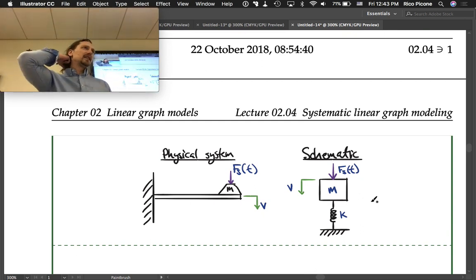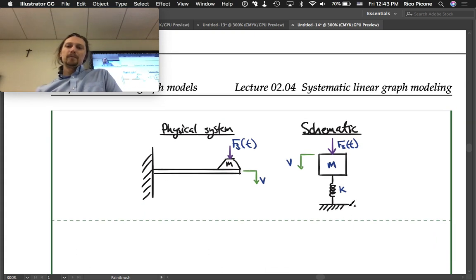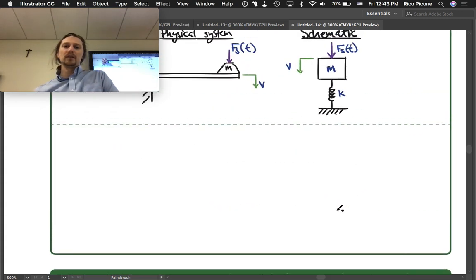The mass is definitely going to have a velocity, so that's a node. The ground is another node. The ground is always a node. So those are two nodes.